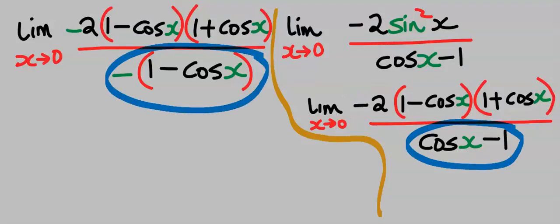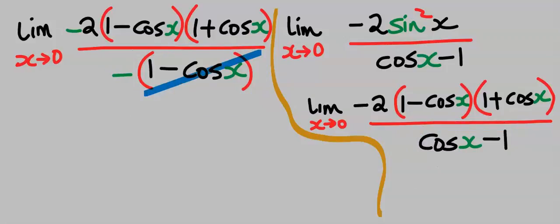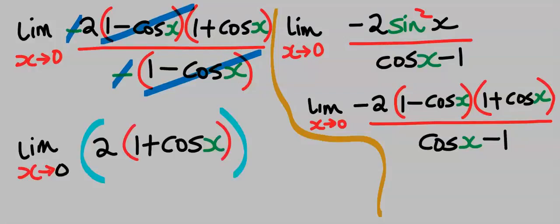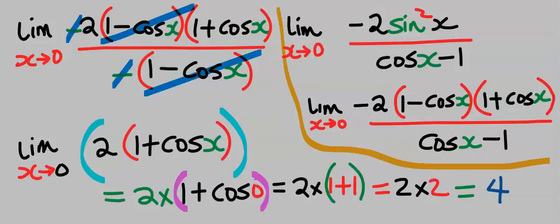This minus multiply by one will give you minus one. Likewise, this minus multiply minus will give you plus cos x. Next, this will take away this. Likewise, the minus will take away the minus. Next, taking the limit of this function, substituting for zero, our answer is four.